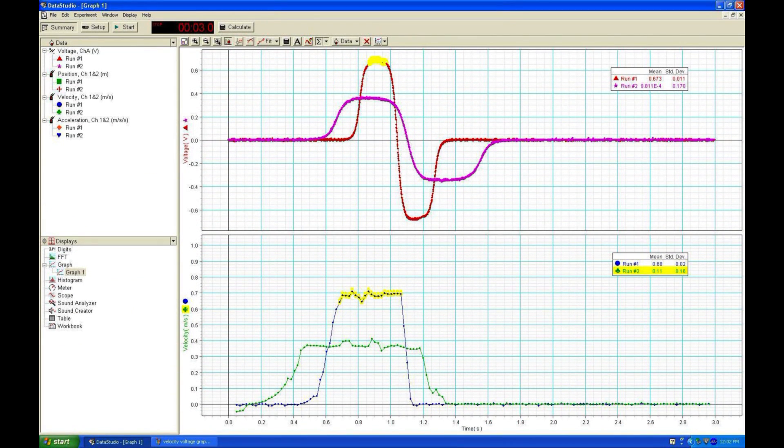When we give the cart less of an initial shove, the velocity is slower and the induced voltage is also less. Collect the mean and standard deviation values for a variety of speeds and induced voltages.